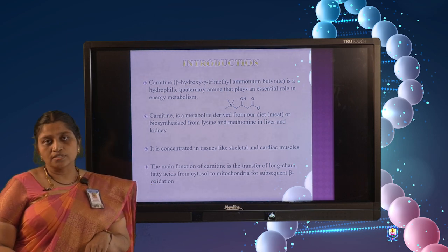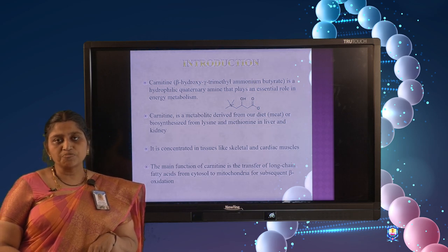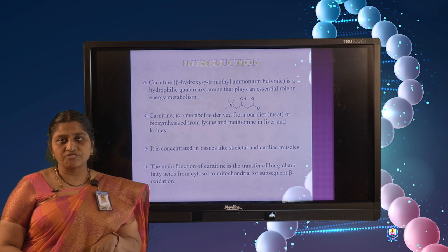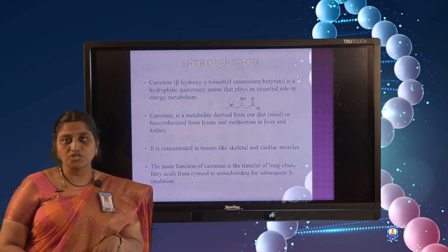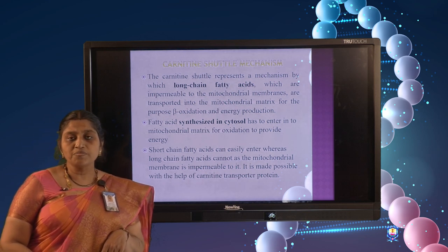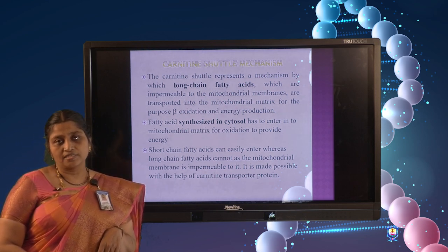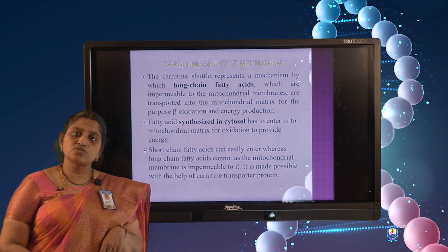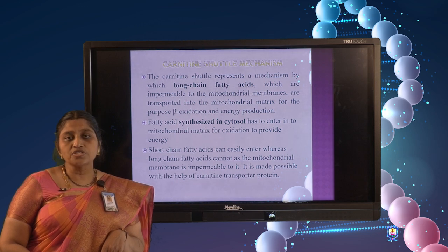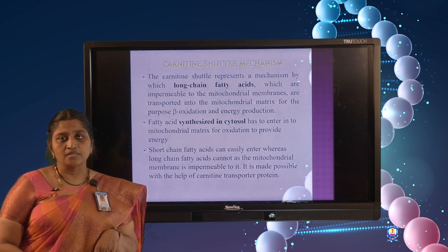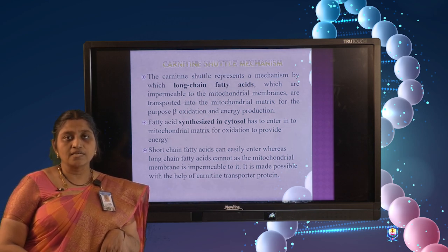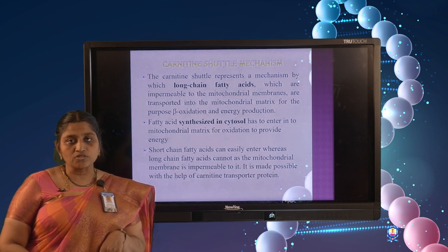The main function of carnitine is to transport long chain fatty acids from the cytosol into the mitochondrial matrix, which is required for subsequent beta oxidation and energy production. The carnitine shuttle mechanism is needed because fatty acids are synthesized in the cytosol, but beta oxidation can only take place in the mitochondria where the required enzymes are located. So this fatty acid has to be transported from the cytosol into the mitochondrial matrix.